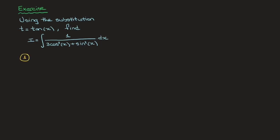The first step is to change the variable. That is, we need to rewrite the integral that we're given in terms of the new variable t. To do that we're going to have to rewrite cosine squared of x as well as sine squared of x in terms of t, and of course we're going to have to rewrite dx in terms of t as well.